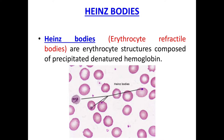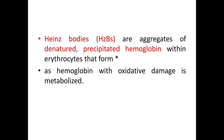First, let's discuss Heinz bodies. Heinz bodies are also known as erythrocyte refractile bodies. They are erythrocyte structures composed of precipitated denatured hemoglobin. They are formed by the denaturation of hemoglobin. Heinz bodies are aggregates of denatured precipitated hemoglobin within the RBCs, and they are formed as hemoglobin is metabolized with oxidative damage. When hemoglobin in the RBC undergoes oxidative damage, it gets denatured and precipitated to form Heinz bodies.